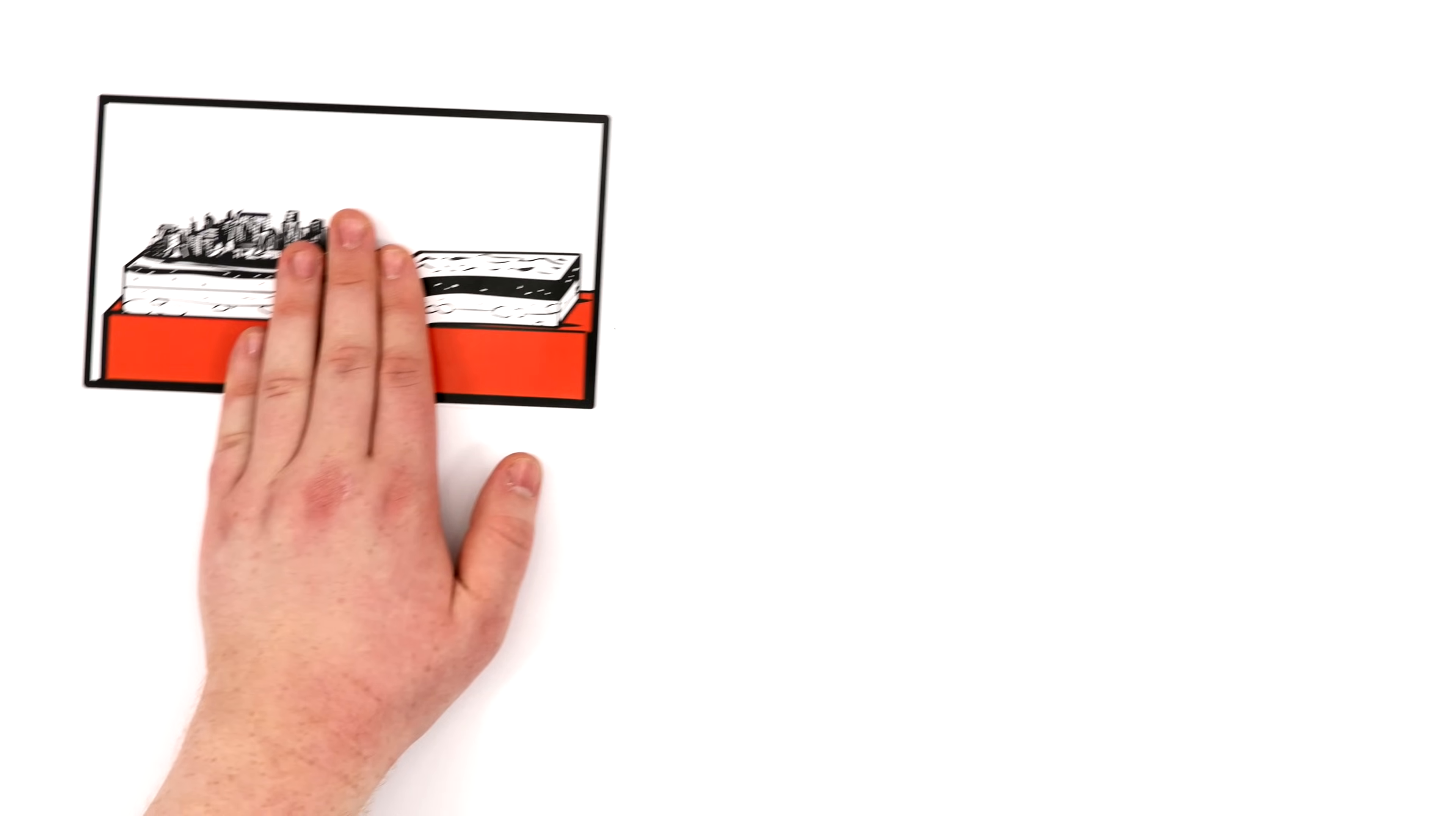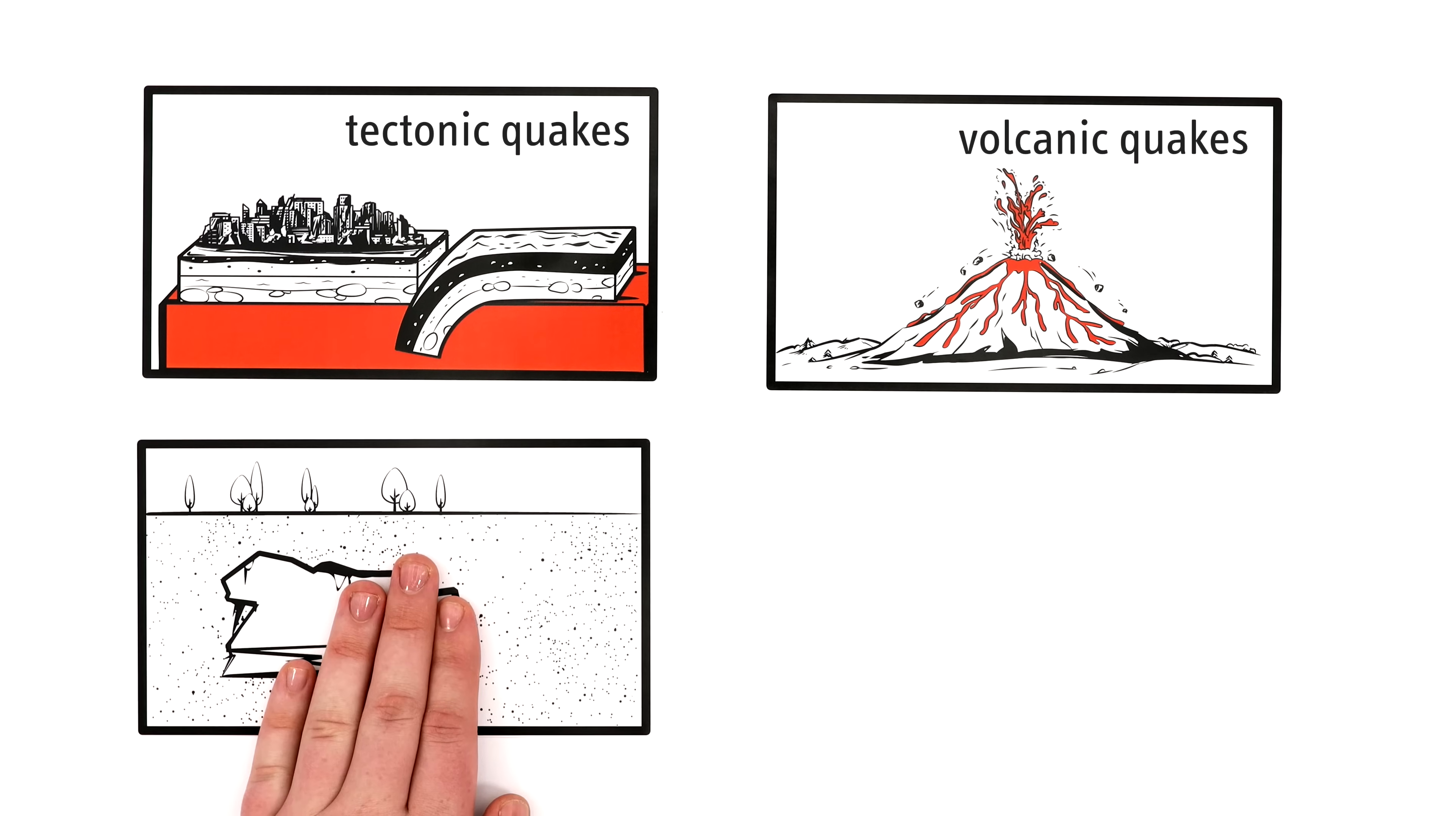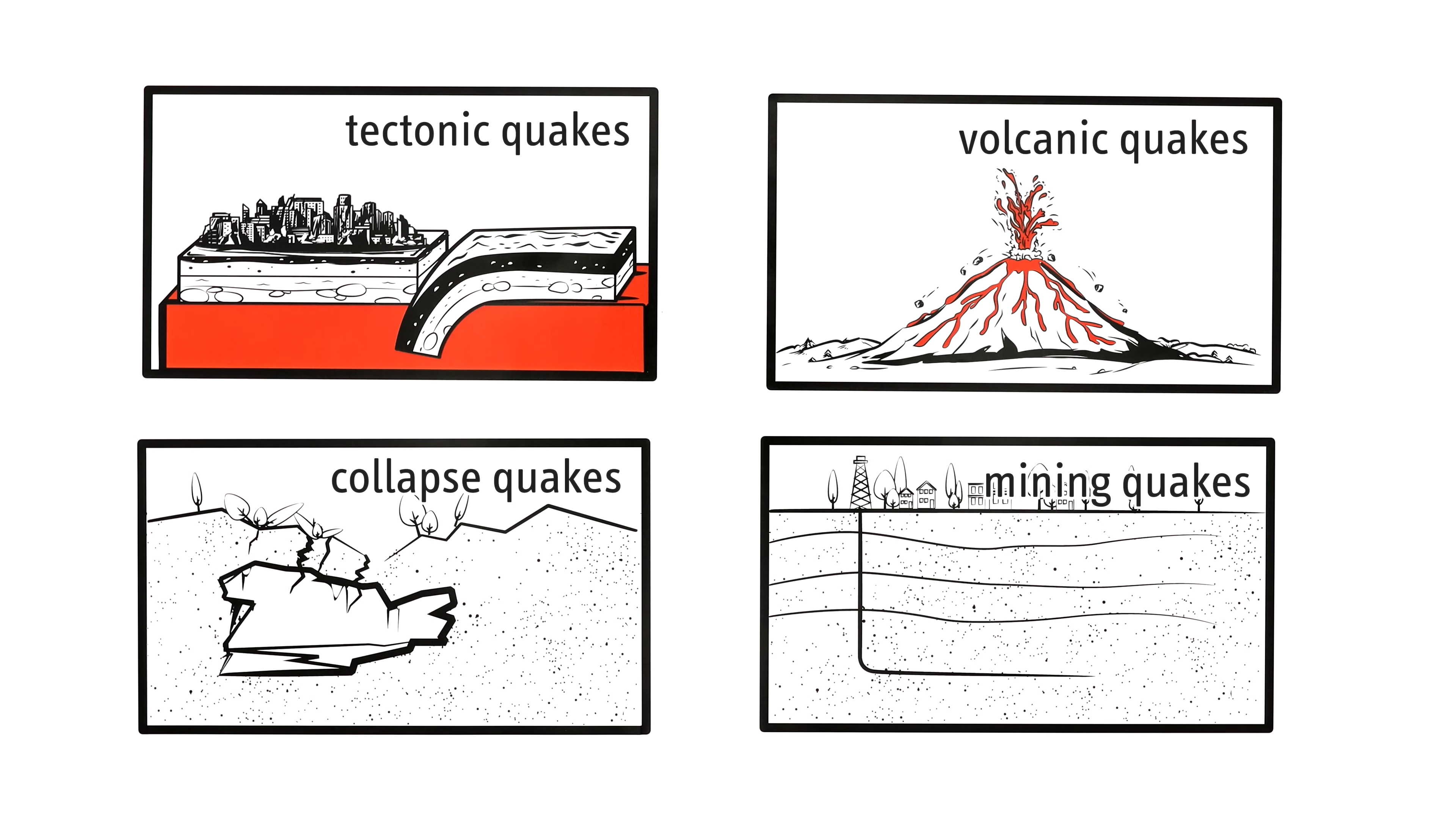So far, we've been talking about tectonic earthquakes. But there are also earthquakes caused by volcanic eruptions, collapse earthquakes when underground caverns collapse, and extraction, drilling, and mining earthquakes induced by humans.